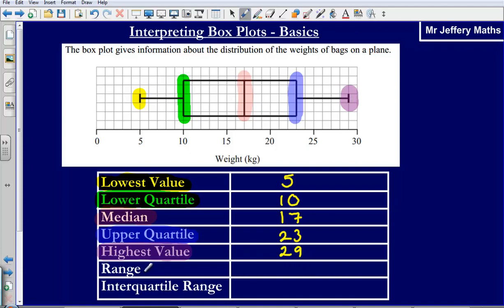Now we can also calculate the range here. Remember that the range is simply the highest value, take away the lowest value. So our range is 29 in this case, minus 5. So our range would be 24.